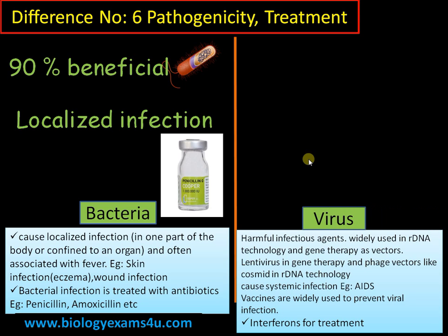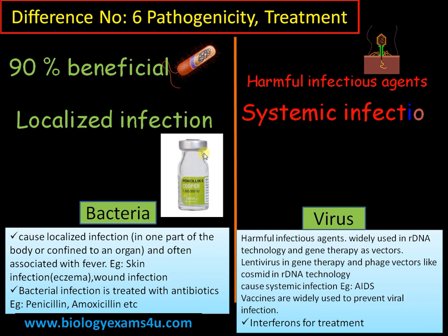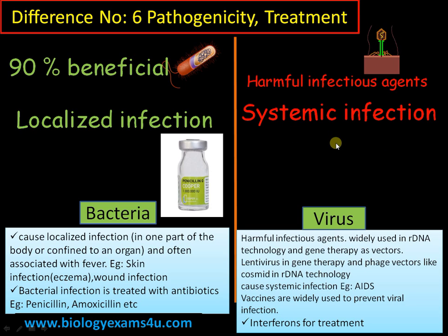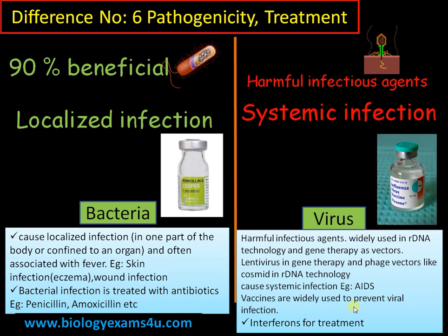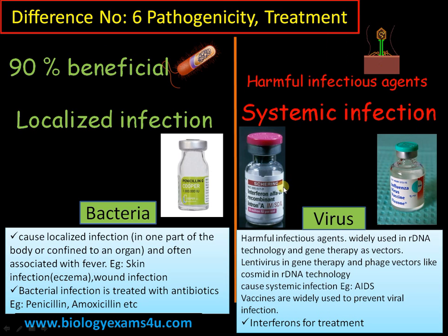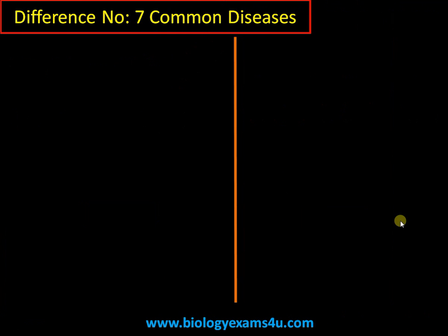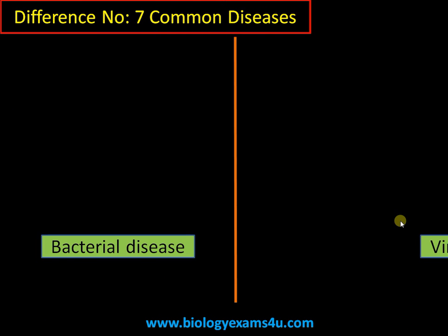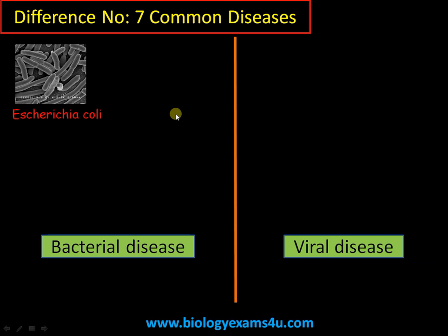Whereas viruses are generally harmful infectious agents. They are widely used in recombinant DNA technology and gene therapy as vectors, but all are infectious. Viruses cause systemic infection — for example, AIDS affects the entire body, disrupting the whole system rather than a localized area. Vaccines are commonly used to prevent viral infection, and upon infection, treatment may include the use of interferons, which are antiviral proteins.